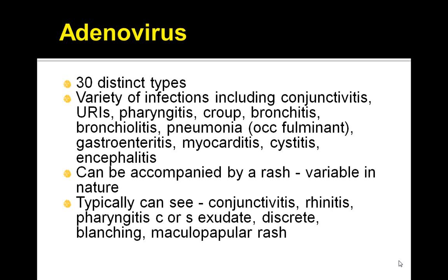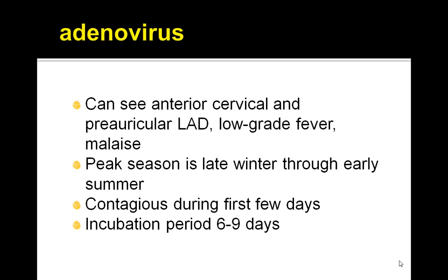It can be accompanied by a rash but that's variable by nature. Typically you will see conjunctivitis, rhinitis, pharyngitis, possibly an exudate and a discreet blanching maculopapular rash. You can also see anterior cervical and preauricular lymphadenopathy with low grade fever and malaise. The peak season is late winter through early summer.